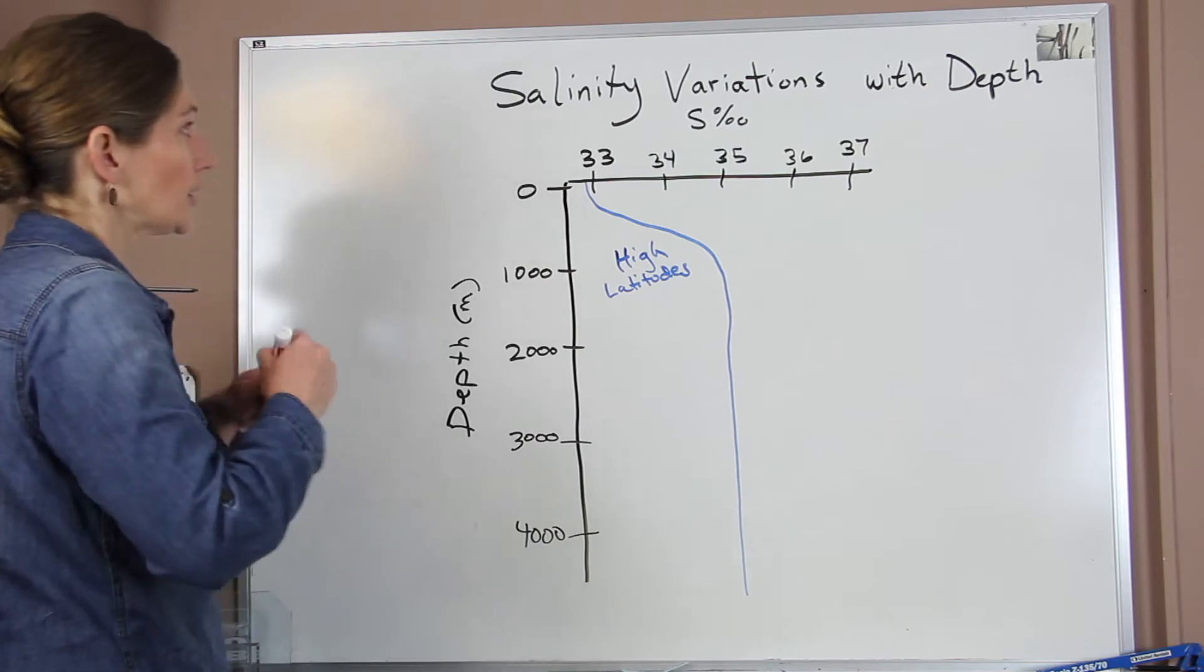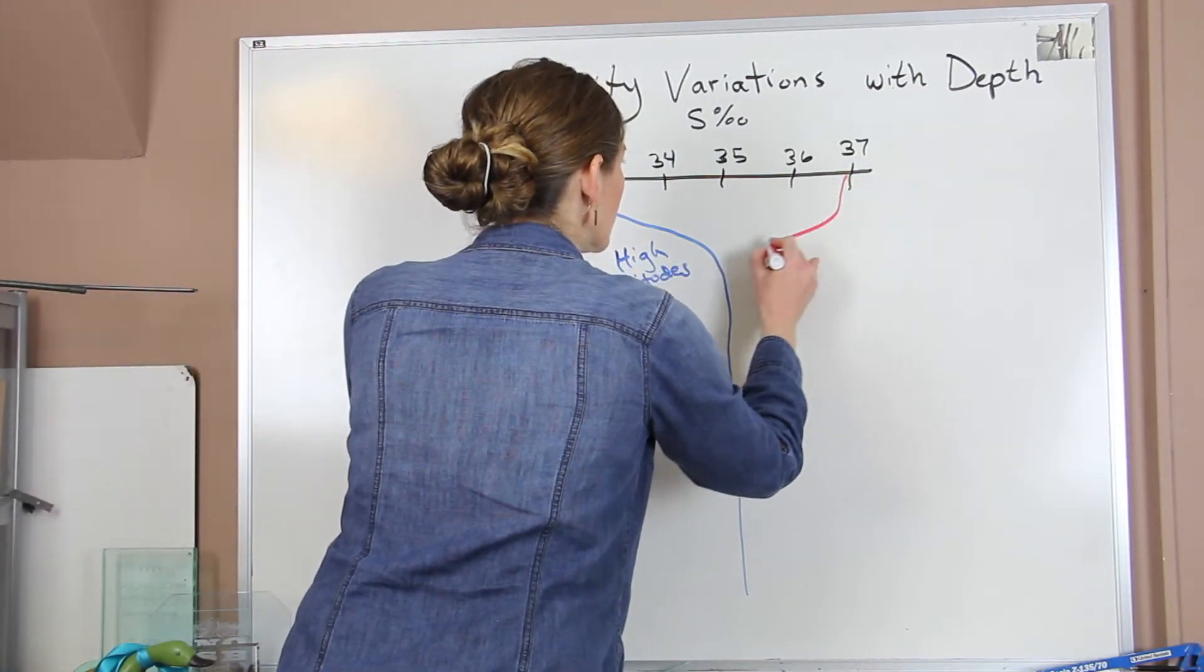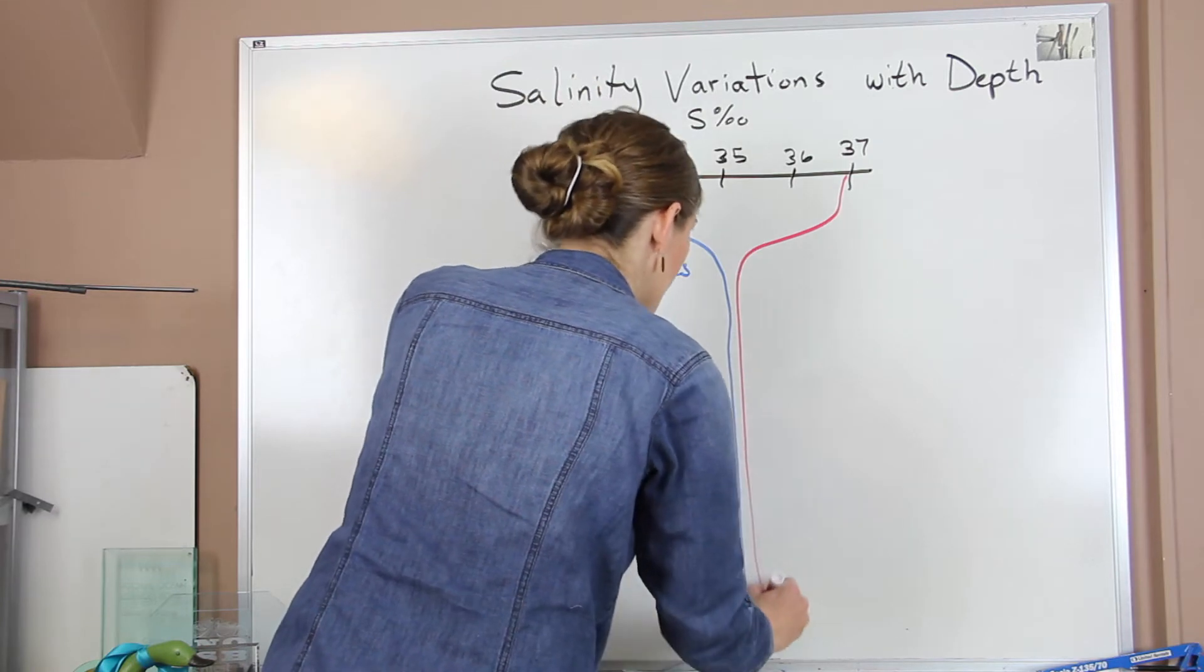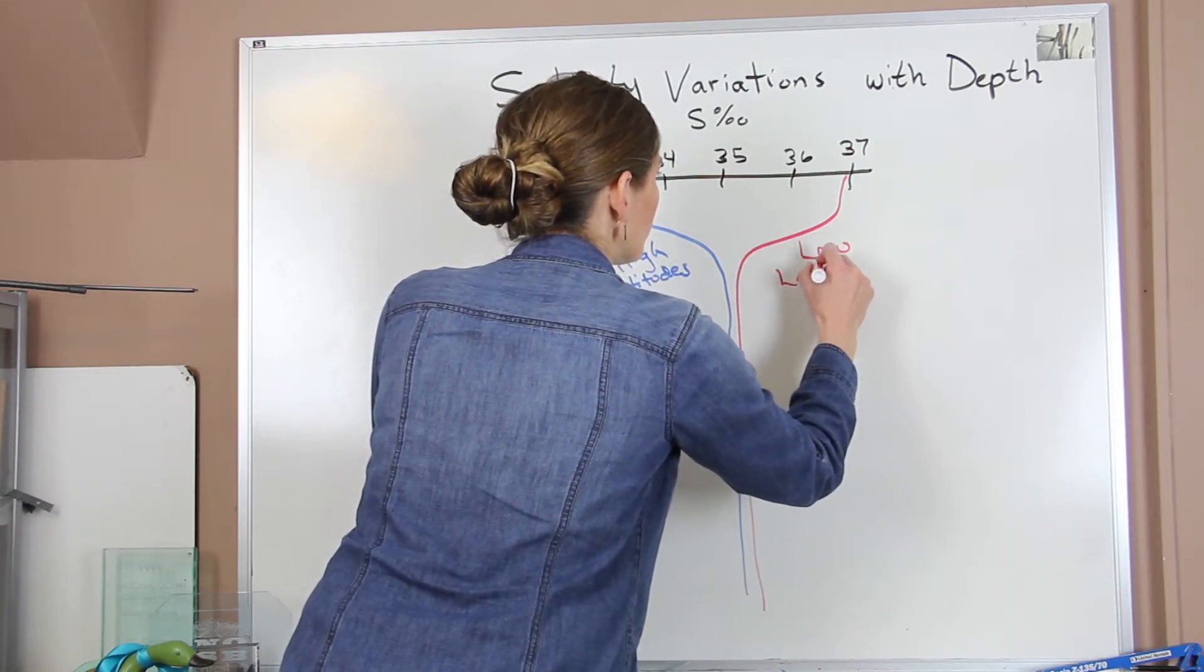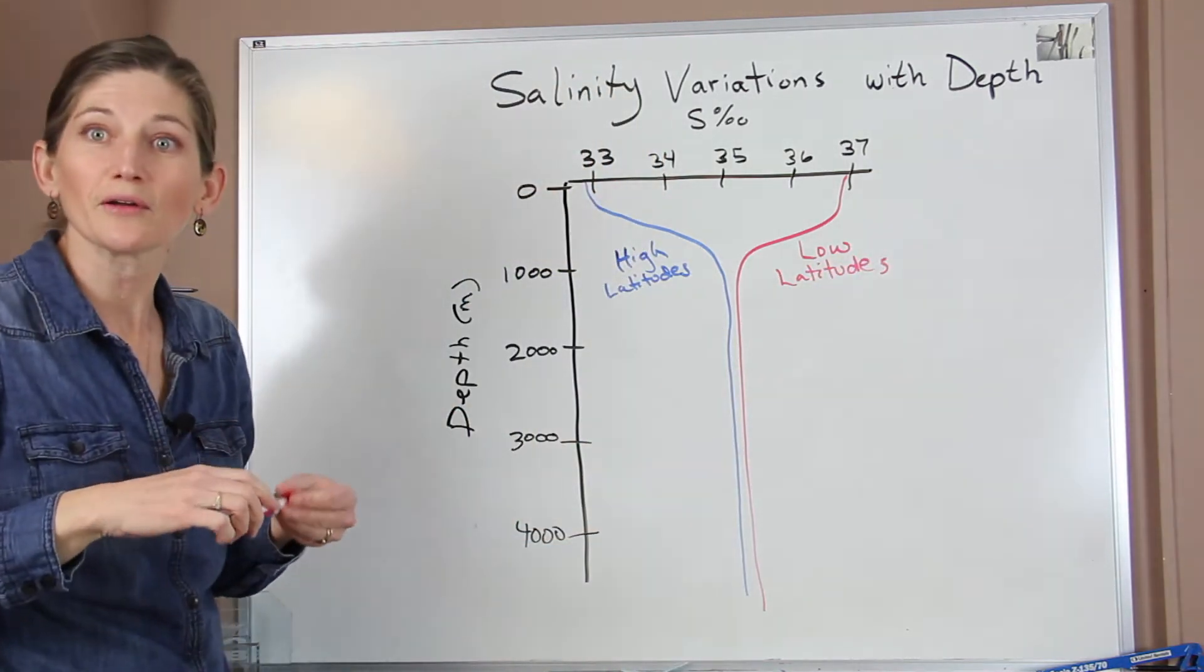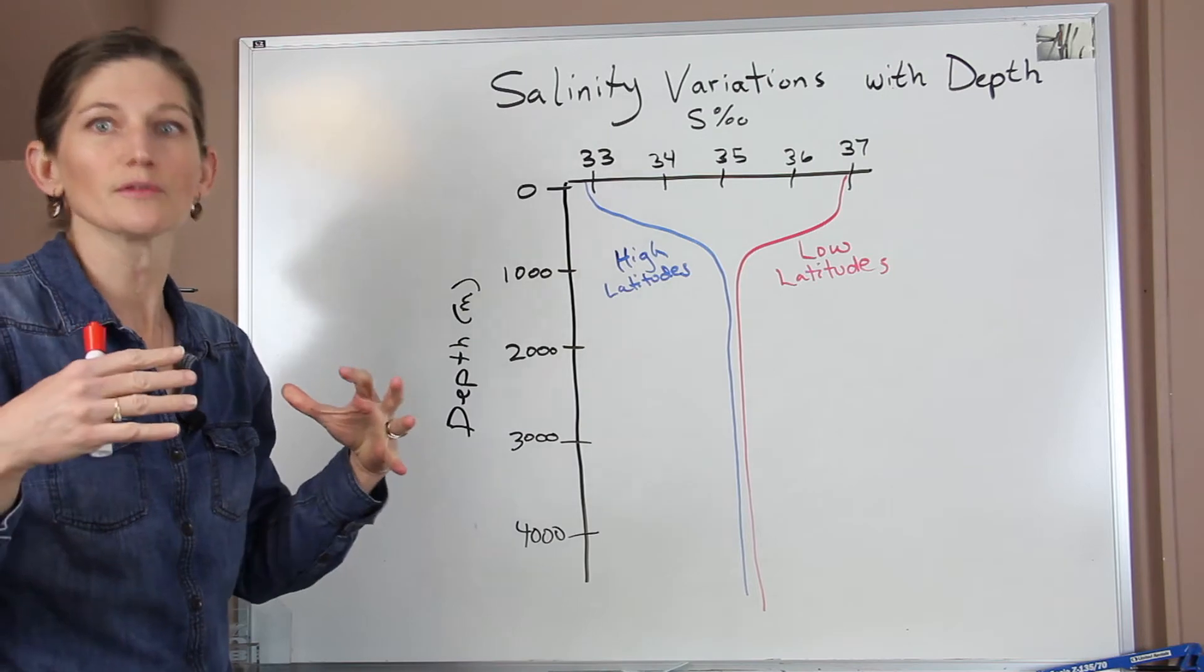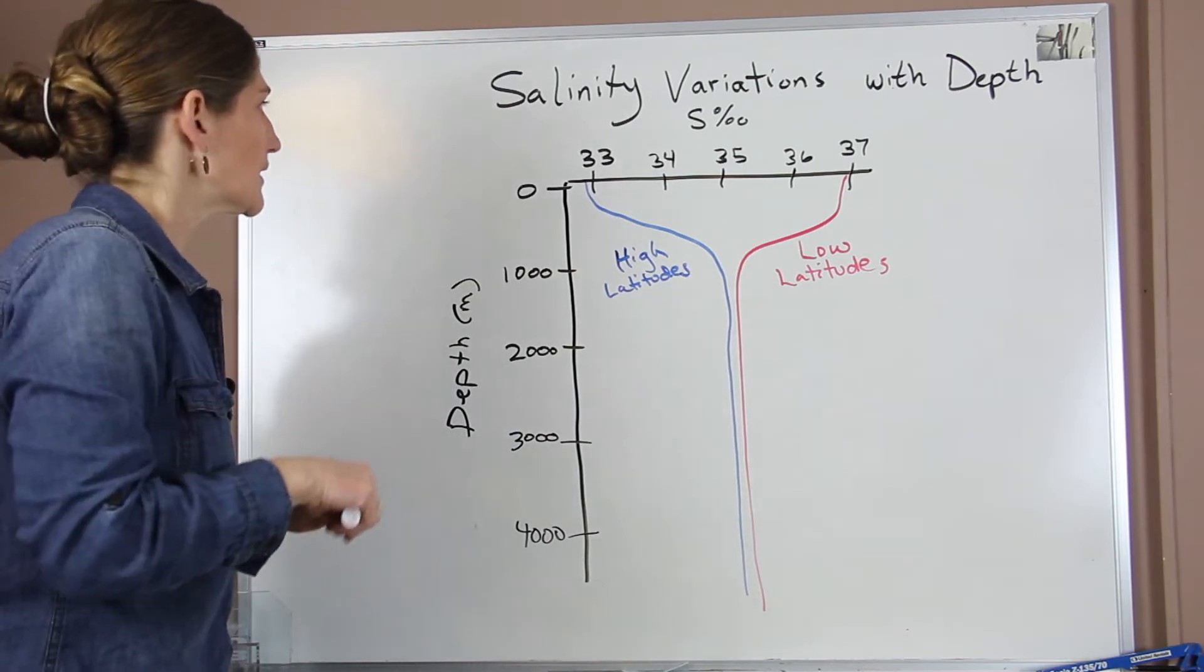And then if we look at our low latitudes, we have high salinity. So our low latitudes are our more tropical latitudes. So things around zero degrees latitude, 15 degrees north and south latitude, et cetera.